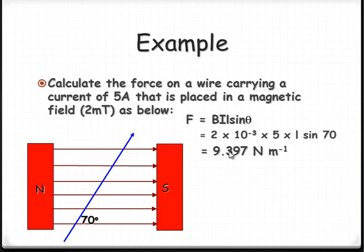This equals 9.397 newtons per metre. So we could adjust that accordingly depending on what length of wire we actually had flowing there. Now for the direction. We've got fingers pointing here. We've got the thumb pointing up. So the direction, the palm would be pointing into the screen or in. So therefore we're saying it's into the page.